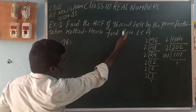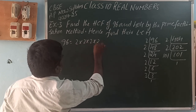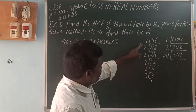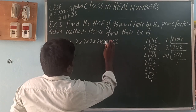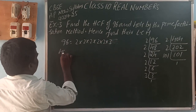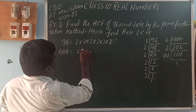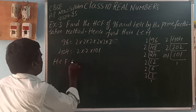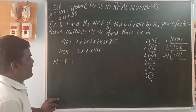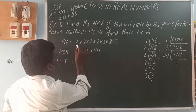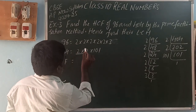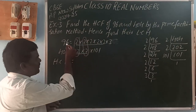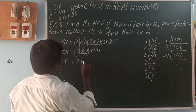So 96 = 2 into 2 into 2 into 2 into 2 into 3, that is 2^5 into 3. Next, 404 — its prime factorization is 2 into 2, that is 2^2. To find HCF, the common prime factor is 2. In 404, 2 appears 2 times; in 96, 2 appears 5 times. The least is 2 times, so HCF = 2 into 2 = 4.